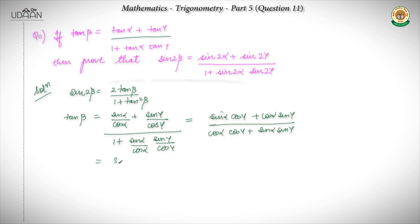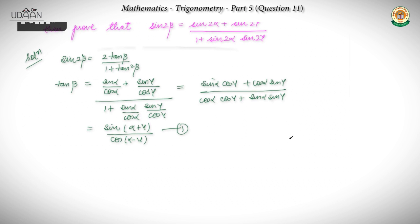We can apply the direct formulas for sin(A+B) and cos(A-B). So this gives us tan β equals sin(α+γ) upon cos(α-γ). This is equation 1. I will substitute this equation into the expression for sin 2β.